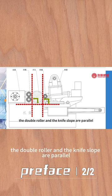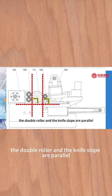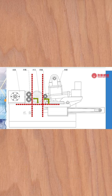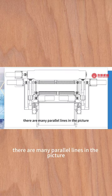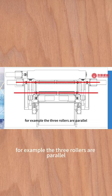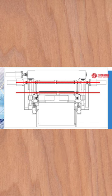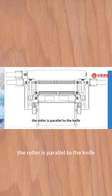The double ruler and the knife slope are parallel. Let's look at the top view. There are many parallel lines in the picture. For example, the three rulers are parallel, and the ruler is parallel to the knife.